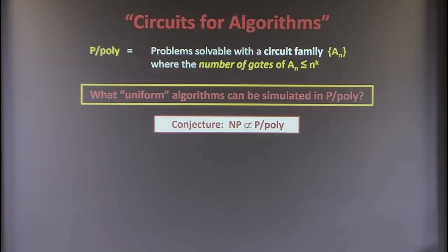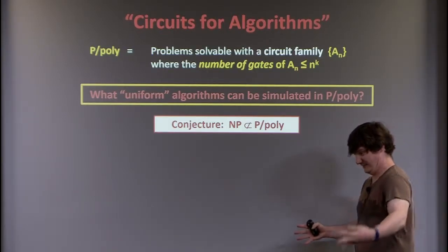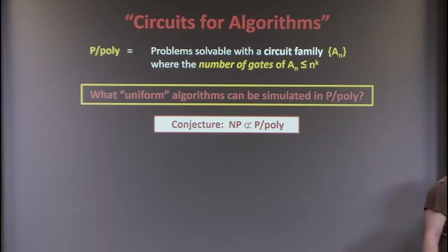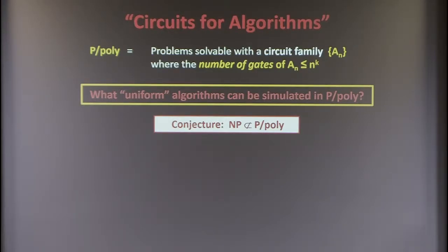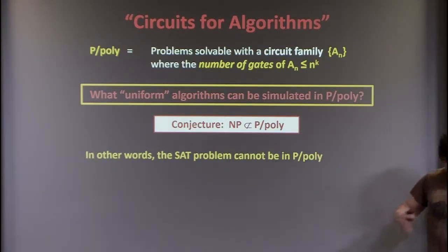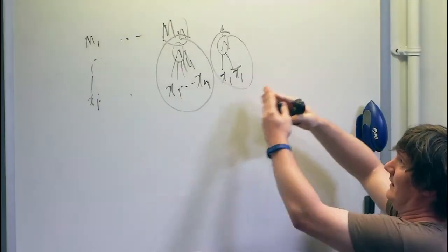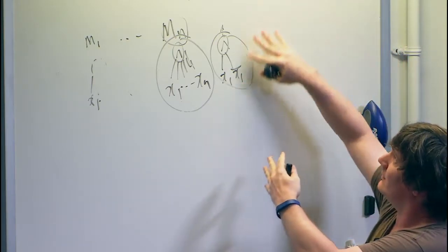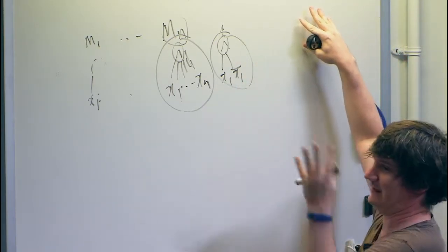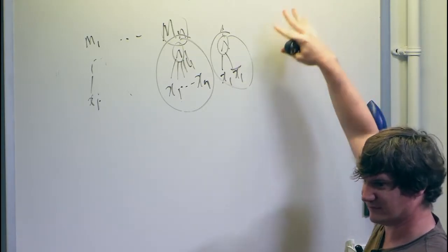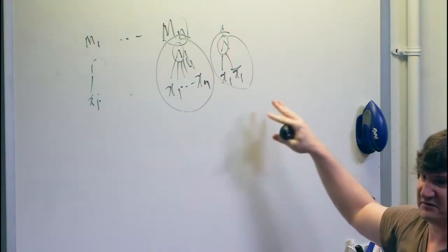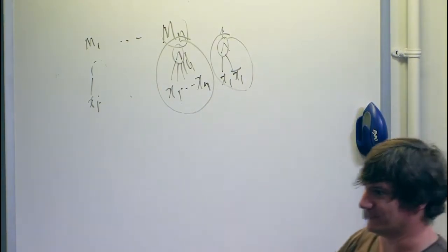It's conjectured — though we don't know if NX is contained in P/poly — that NP is not in P/poly, which would be a strengthening of P ≠ NP. We think the SAT problem cannot be in P/poly. It seems that if you wanted to solve SAT on instances of length a million, there's not going to be some efficient chip design — even hard to obtain — that could solve SAT using only polynomially many gates.